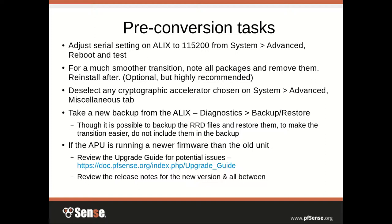After making those changes, take a fresh backup from the ALIX by going to Diagnostics > Backup/Restore. You can uncheck the box to include RRD data in the backup and restore it to the APU. However, if going from 2.0 to 2.1, it won't carry over because the ALIX runs i386 and the APU runs AMD64 — the file architecture would be different. On 2.1 and later, RRD data is backed up in an architecture-independent format, so it could work. Personally, I leave it out to avoid any issues — it's not so critical that it's worth risking problems.